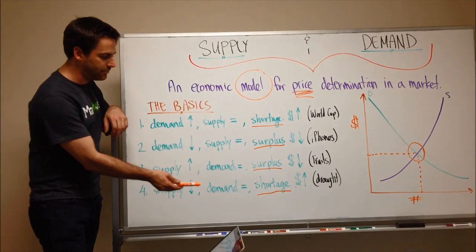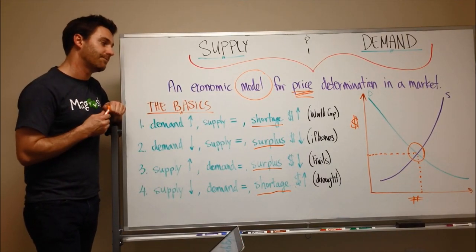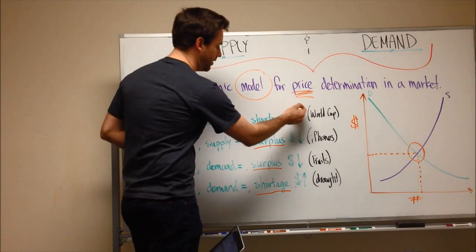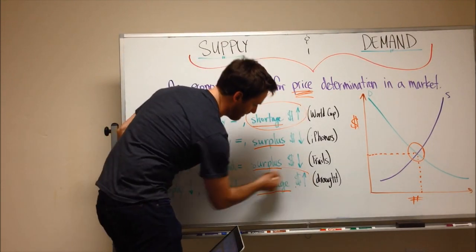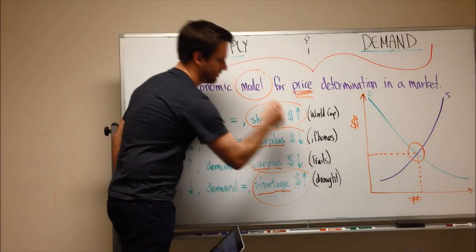So supply goes down, demand remains the same, and water gets more expensive. So what you can see here is when there's a shortage, price goes up, and when there's a surplus, prices go down.